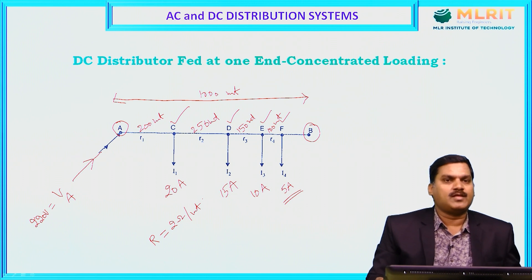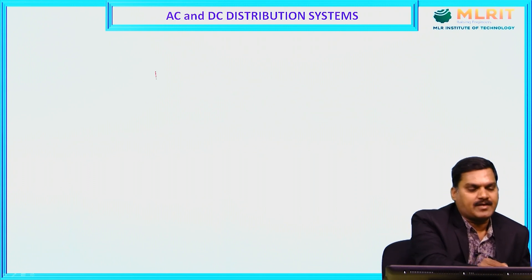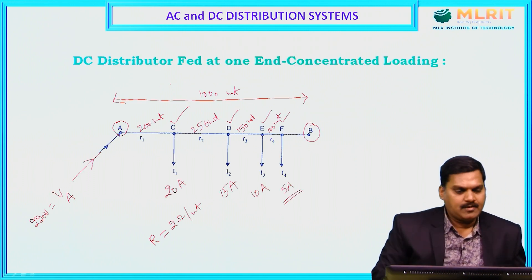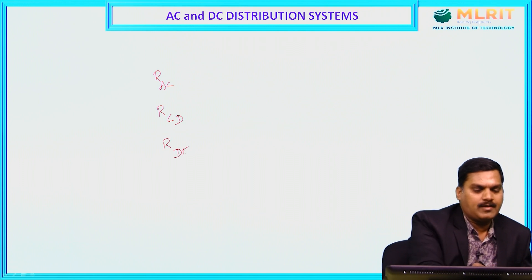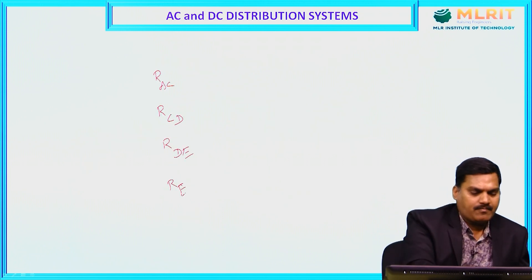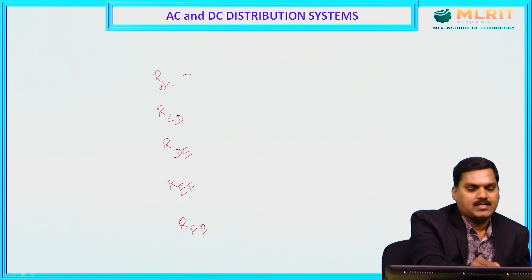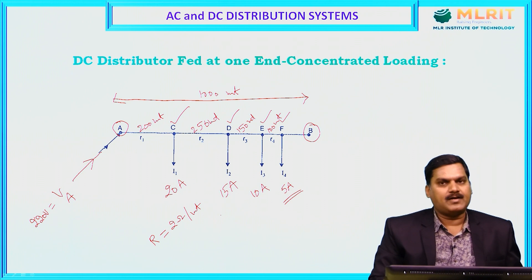Once we know the resistance of the conductor, we have to calculate all section resistances: RAC, RCD, RDE, REF, and RFB. These are the different resistance values of the distributor we need to calculate first.